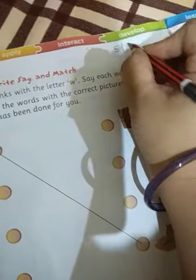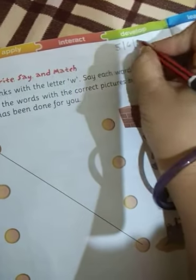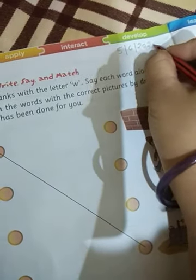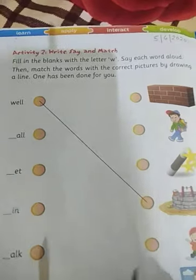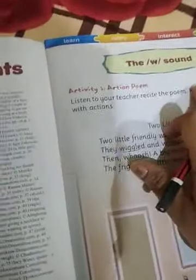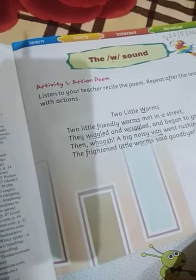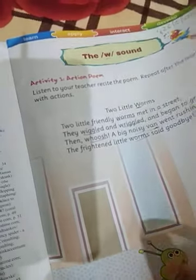Now, open page number 8. Let's put date here. 5 June 2020. In our previous class, we learned about the W sound. What is the sound of W? Wa.